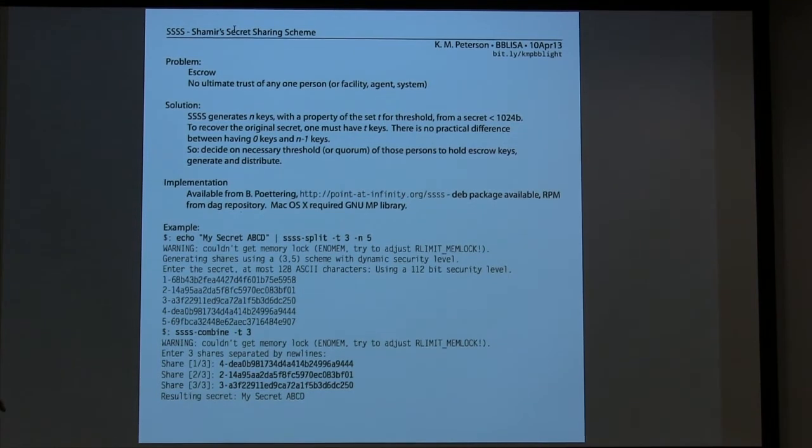While I've been talking, you've been probably looking at this. I basically said, let's encode my secret ABCD, SSSS split, T is the threshold, which is the minimum number of keys, and generate five of them. And it's complaining about a memory lock.